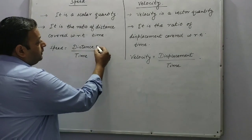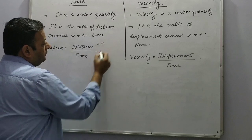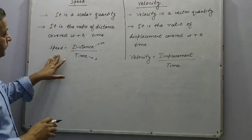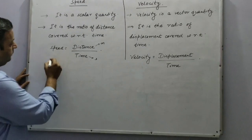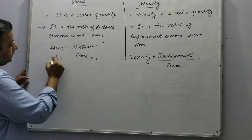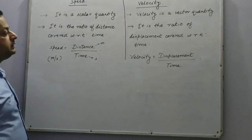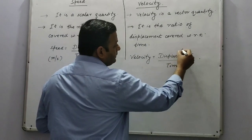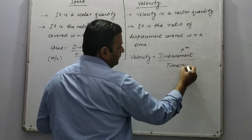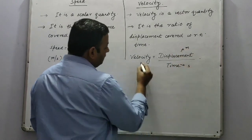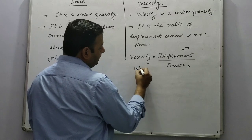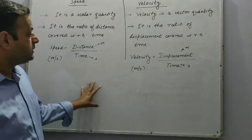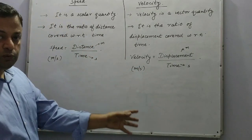The SI unit of distance is meter and time is second, so the unit of speed will be meter per second. Similarly, the SI unit of displacement is also meter and time is second, so the unit is meter per second. So we can say speed and velocity both have the same units.